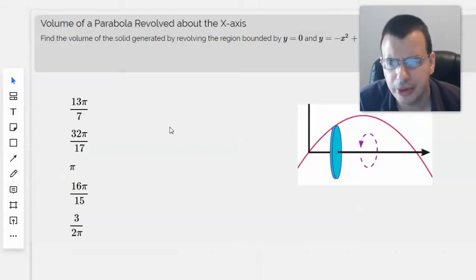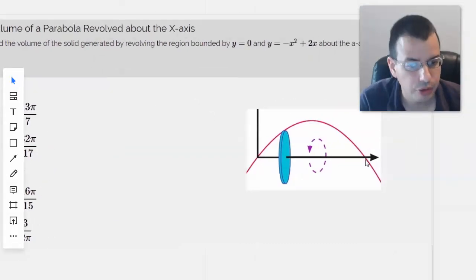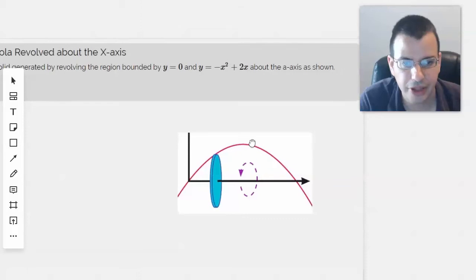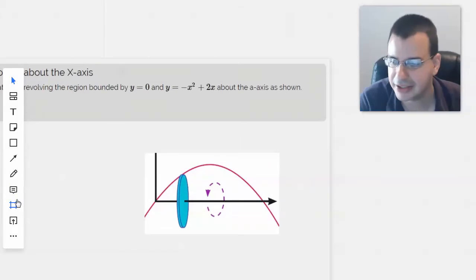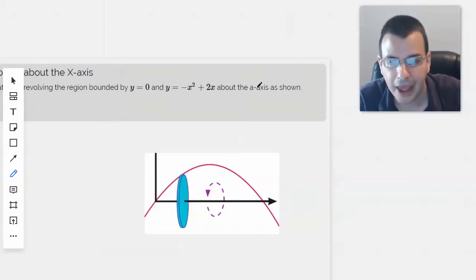Find the volume of the solid generated by revolving the region bounded by y equals 0, so the x-axis, and y equals negative x squared plus 2x about the axis, probably means x-axis, as shown.